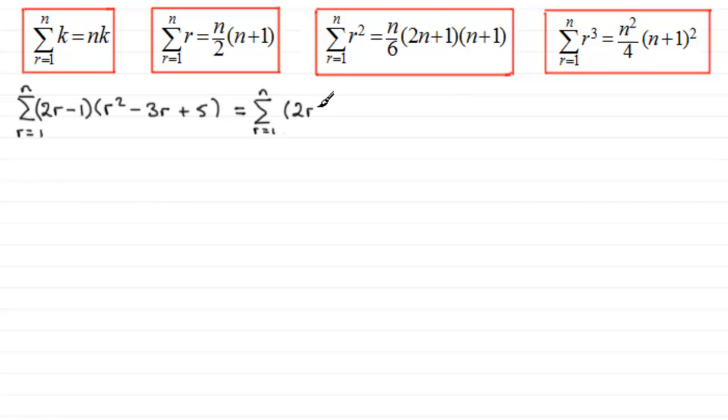If you group similar terms together, you end up then with 2r cubed minus 7r squared plus 13r minus 5. Now what we can do is take each of these terms and carry that Sigma notation through each of the terms.